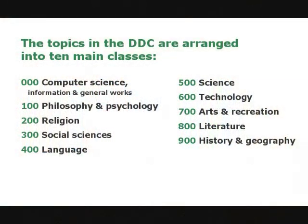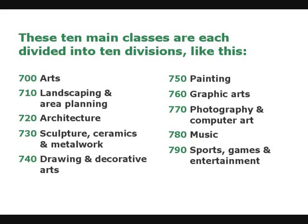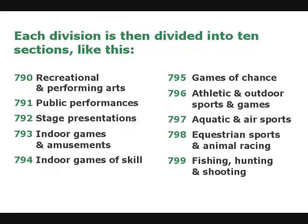The topics in the DDC are arranged into ten main classes. These ten main classes are each divided into ten divisions, like this. Each division is then divided into ten sections, like this. You'll see all of these numbers on the left side of the decimal point, but what about the numbers on the right side of the decimal point? The numbers on the right side are used to divide a specific subject into even more specific parts of a subject.